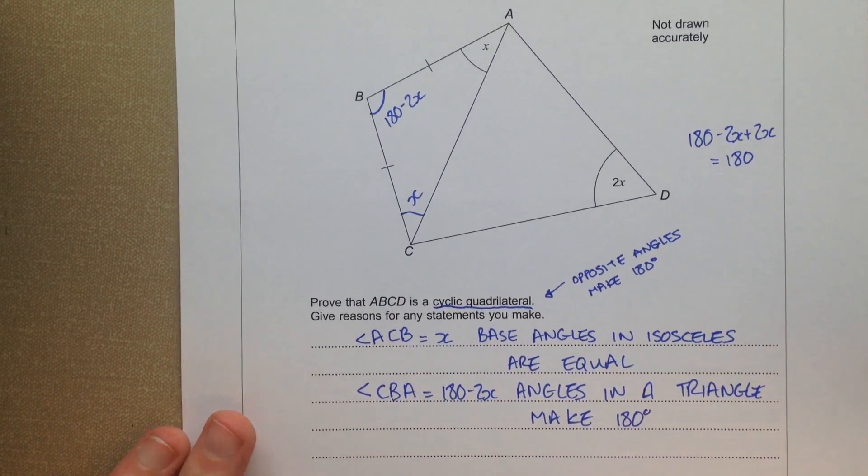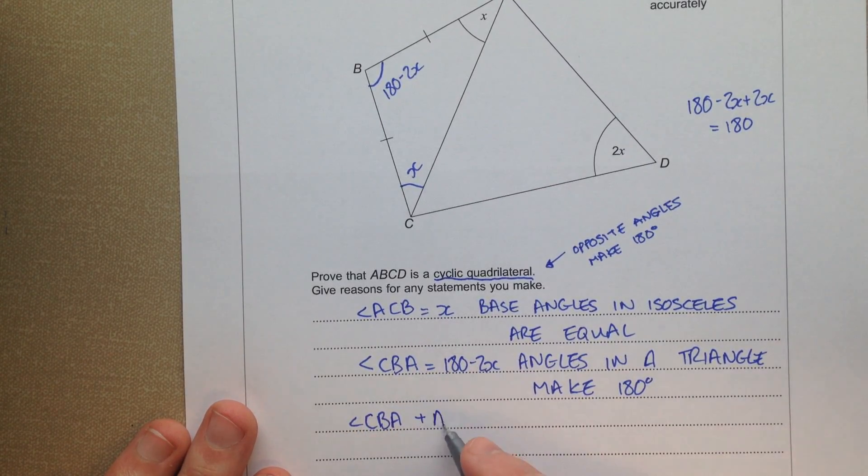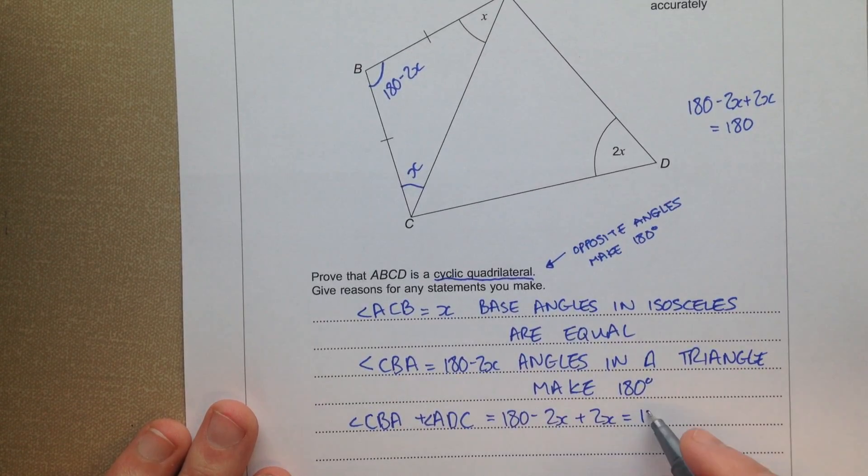And then we said CBA plus ADC equals 180 take away 2x plus 2x equals 180.